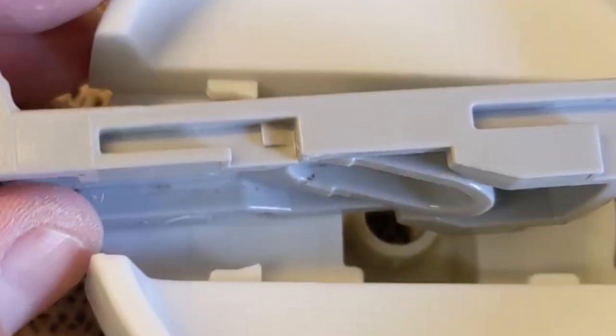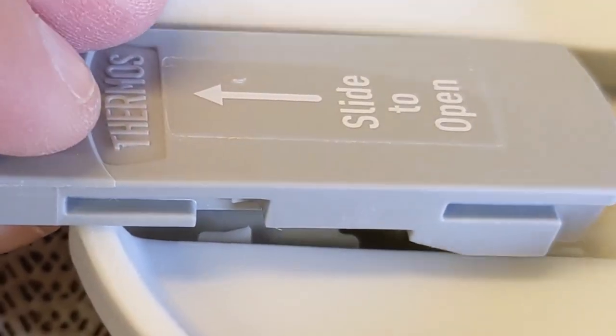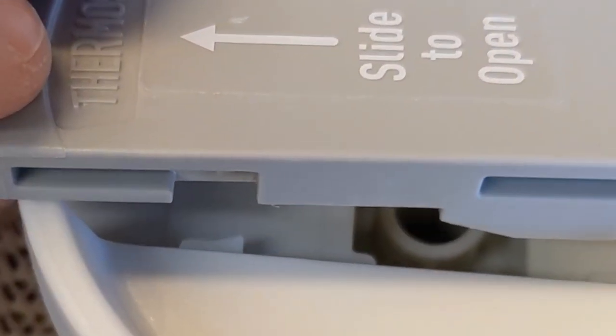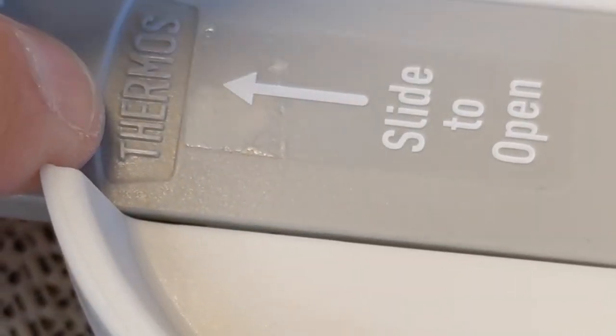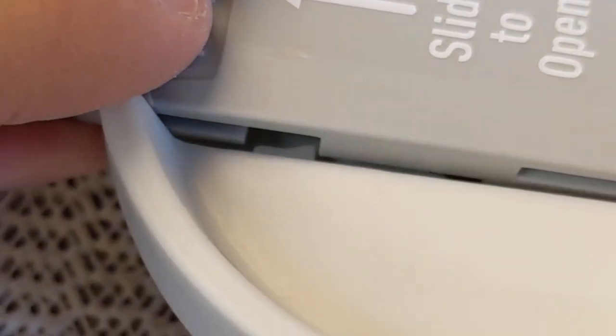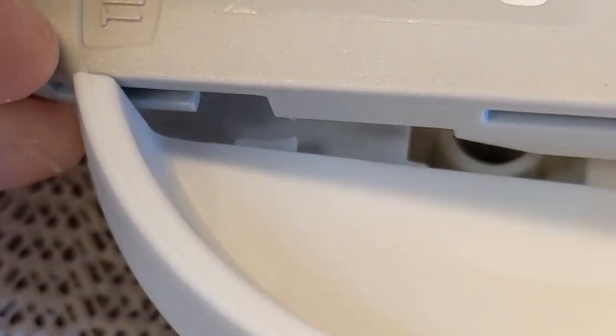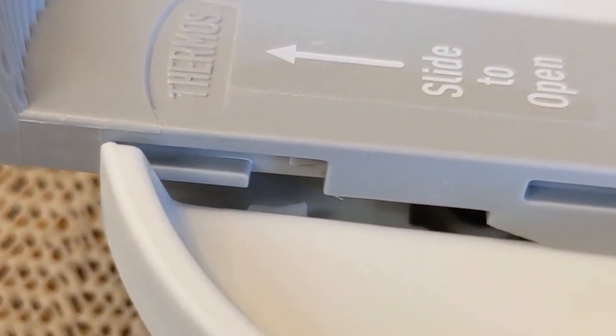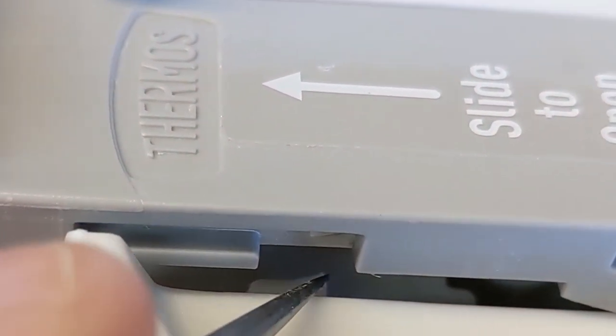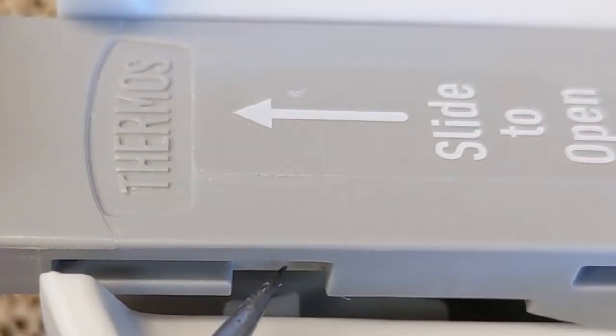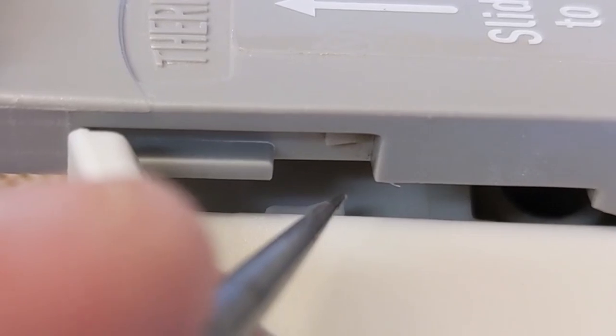Essentially, the way this works is you can see how those two tabs fit together right there, and then it just drops into place. When the lid is slid forward towards the closed position, the little wedge down here bypasses the wedge here, and once those two bypass, they snap past each other.